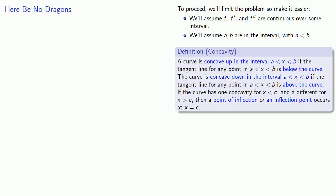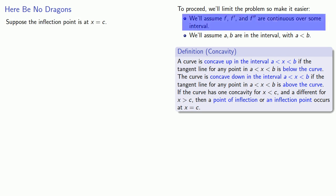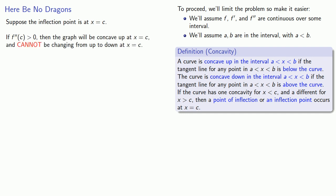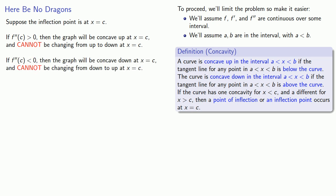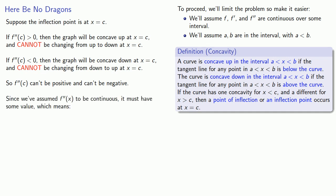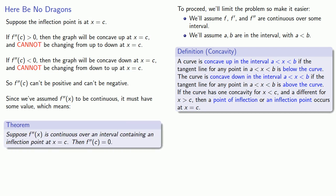Suppose the inflection point occurs at x equals c. Because we've assumed that our function's first and second derivatives are continuous, we know f double prime must exist. If our second derivative is positive, then the graph will be concave up, and it cannot be changing from up to down at x equals c. And if f double prime is less than zero, then the graph will be concave down, and it cannot be changing from down to up at x equals c. So that means our second derivative can't be positive and can't be negative. Since we've assumed f double prime is continuous, it must have some value, and this means the second derivative must be equal to zero.